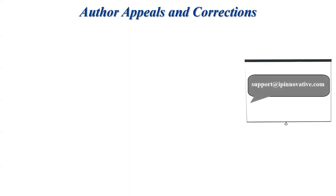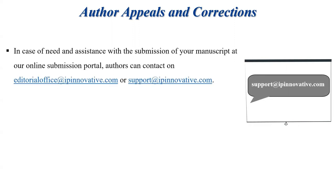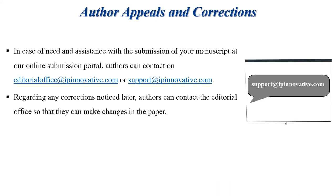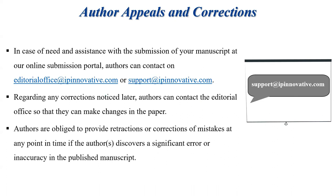The last point is author appeal and corrections. For any help or support, authors can contact the editorial office at support@ipnovative and editorial office at ipnovative.com. Regarding any corrections in a published article, authors can contact the editorial office to make changes in the paper. Authors are also obliged to provide retractions or corrections of mistakes at any point in time if they discover a significant error or inaccuracy in the published paper.